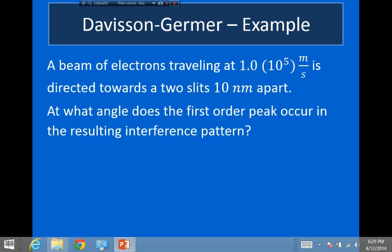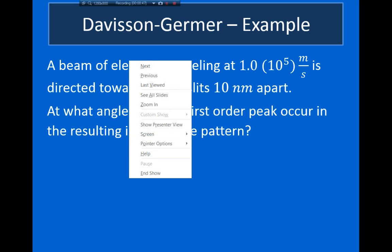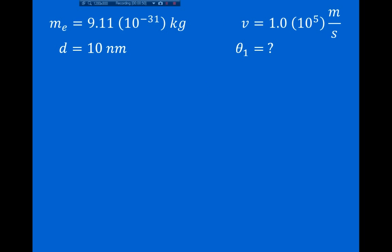Let's take a look at an example you do need to know for this class. A beam of electrons is traveling at a speed of 1.0 × 10⁵ m/s and is directed toward two slits separated by 10 nanometers. The question asks us to find the angle for the first-order interference peak. We need to use the de Broglie equation to find the wavelength of the electrons, then use that wavelength in the usual double-slit formula. For two slits, constructive interference occurs when d sinθ = mλ, and for the first-order peak, m = 1.